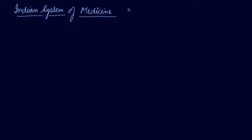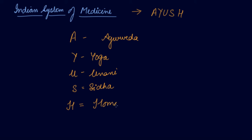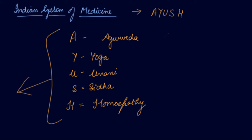The Indian system of medicine refers to medical systems of Indian origin or those accepted into Indian culture, collectively known as AYUSH. A stands for Ayurveda, Y for Yoga, U for Unani, S for Siddha, and H for Homeopathy. These are the medicine systems found in India, along with Allopathy — English medicine.